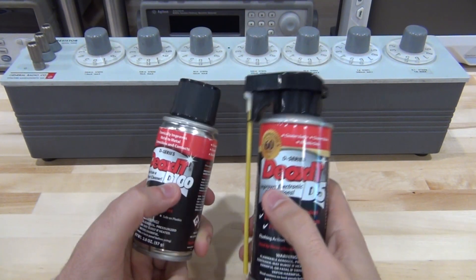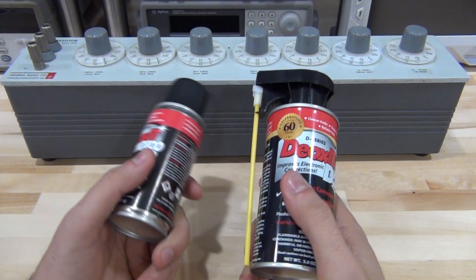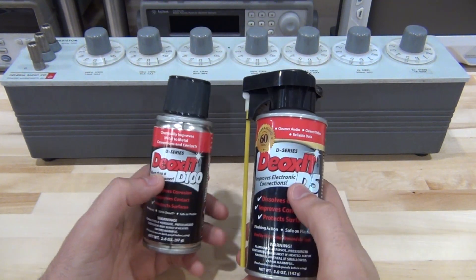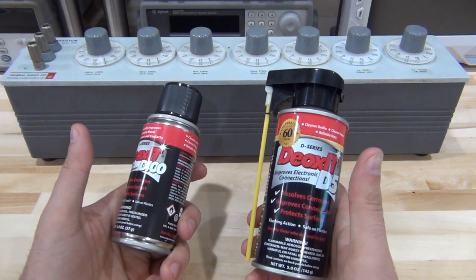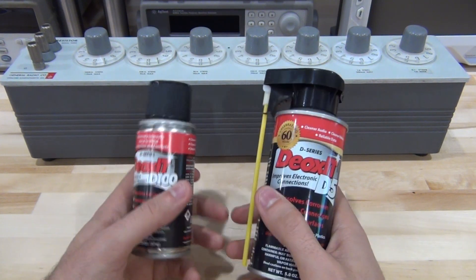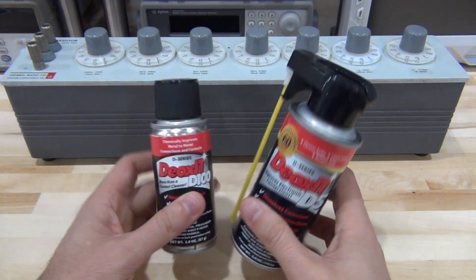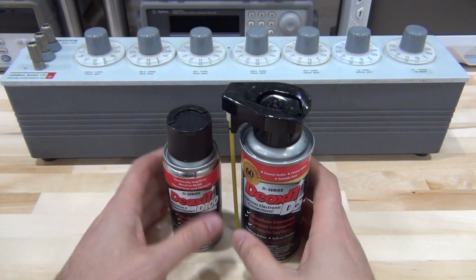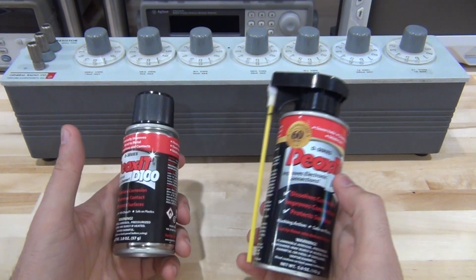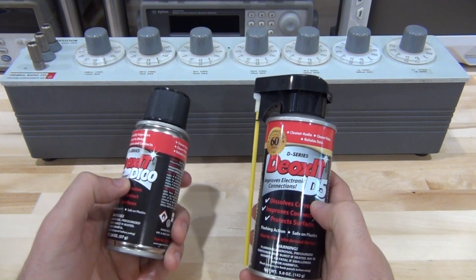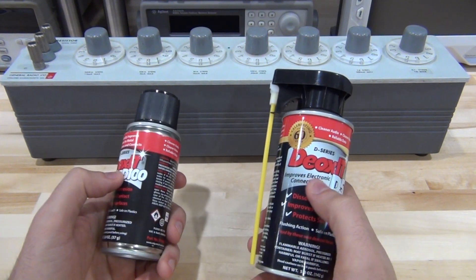Pretty much everybody's heard of DeoxIT. They're from CAIG Laboratories, they've been around since 1959, and DeoxIT is considered the gold standard in the industry for contact cleaners and lubricants and solvents. When you go to the website you may feel overwhelmed by the amount of different products, applicators, and different applications.